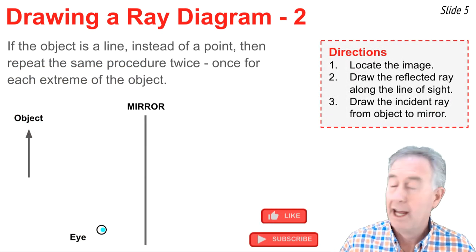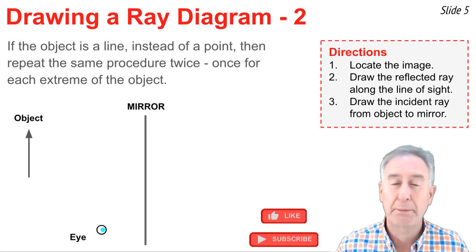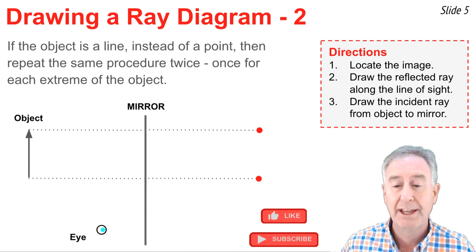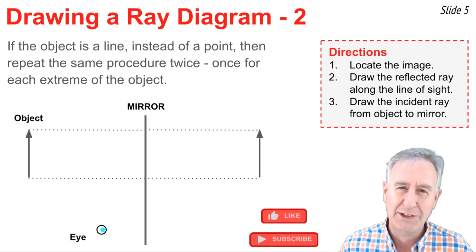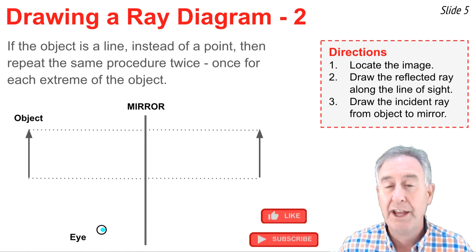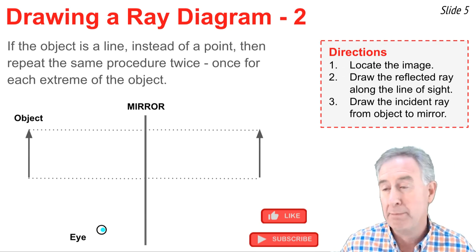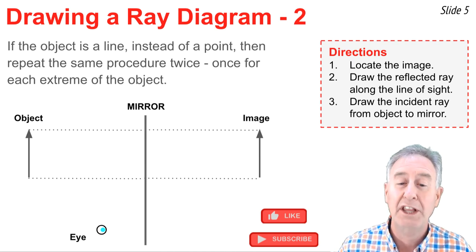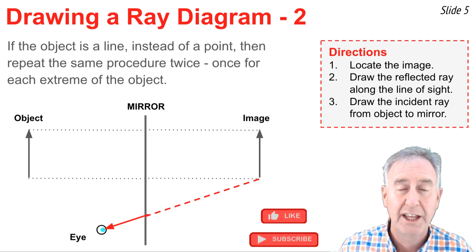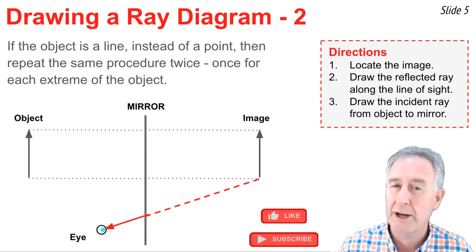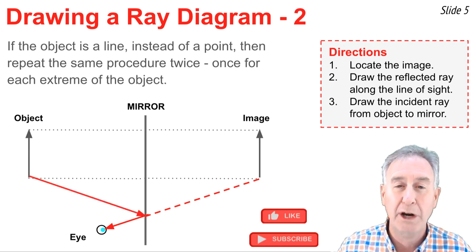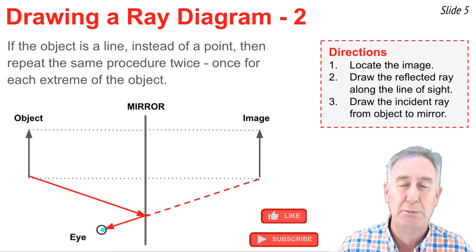If the ray diagram that you're drawing is for an object arrow instead of for a point, then you have to repeat the process twice — once for each extremity on that object. You have to locate the image of the topmost part of the object and the image of the bottommost part of the object, then draw the complete image between these two image points. Now I've determined the image location. I have to determine the reflected and the incident ray for both the bottom part and the top part of the image. Beginning with the bottommost point, I sight along a line there, draw my reflected ray along that line of sight, dash it backwards towards the image to show where I'm sighting. Then I draw the incident ray from the bottommost part of the object to the mirror at the location where I'm sighting at the bottommost part of the image.